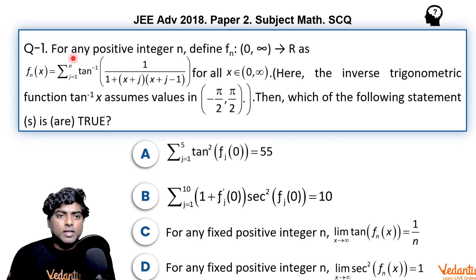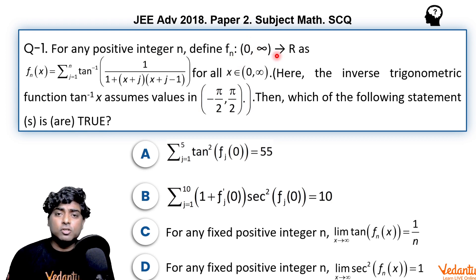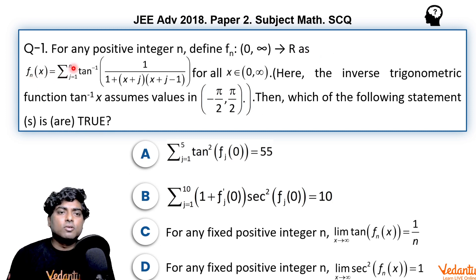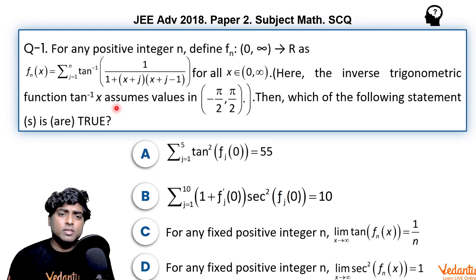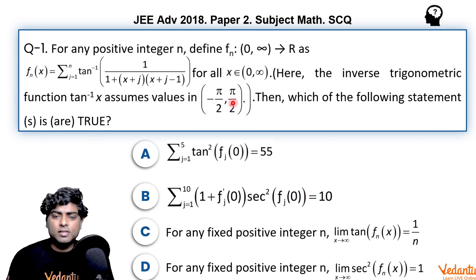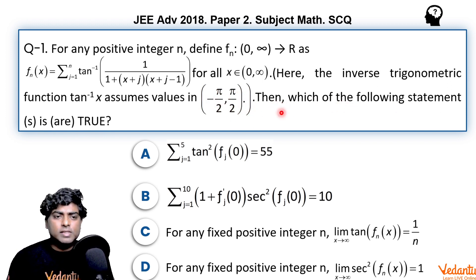It says: for any positive integer n, define Fn with domain as the open interval (0, ∞) to co-domain ℝ (all real numbers), as Fn(x) = Σ (j=1 to n) of tan⁻¹(1 / (1 + x·j·(x+j)(x+j−1))), for all x in the open interval (0, ∞), where the inverse trigonometric function tan⁻¹ assumes principal values in the open interval (−π/2, π/2).